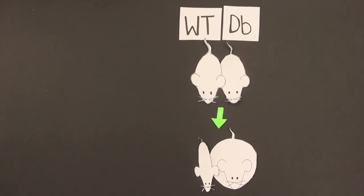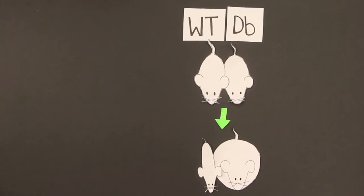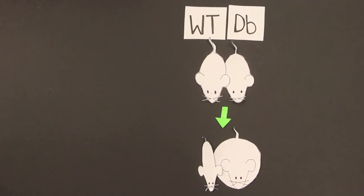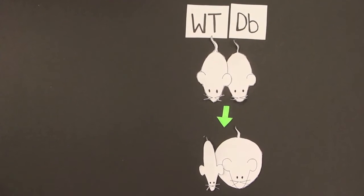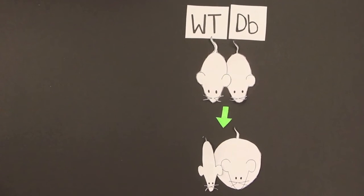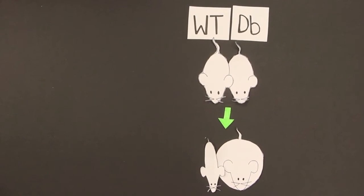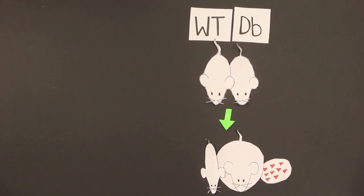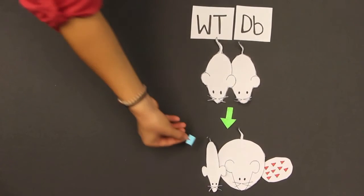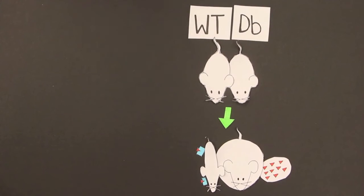First, researchers looked at a combination between DB and normal mice. When they were attached, the wild-type mice rapidly lost weight while the diabetic mouse rapidly gained weight. This is because the DB mouse produces but doesn't respond to a signal to stop eating, but the normal type receives a signal and its eating drive is suppressed.